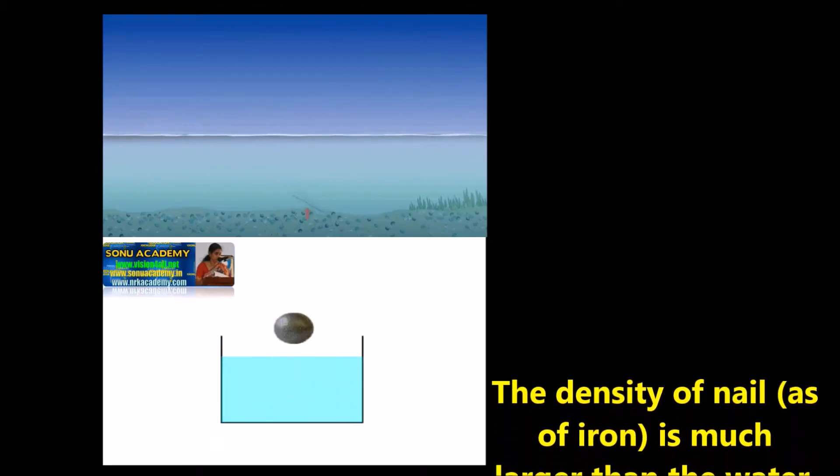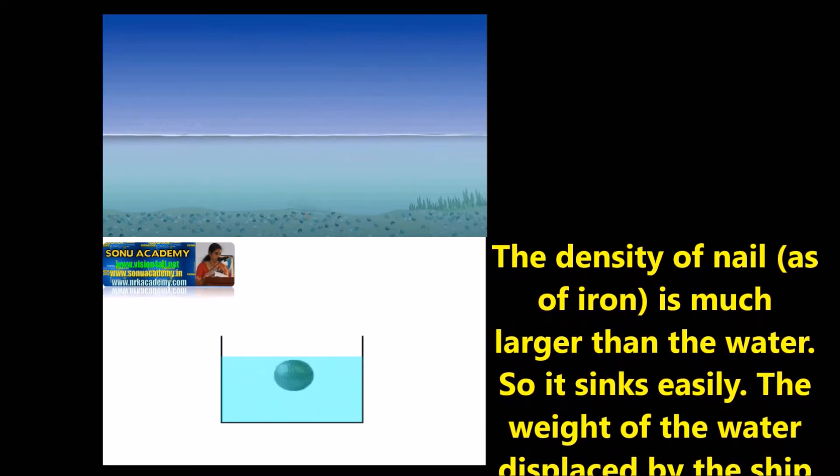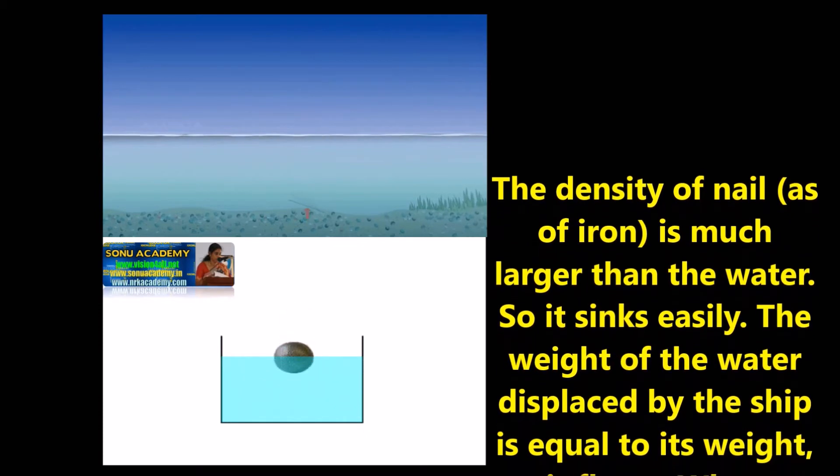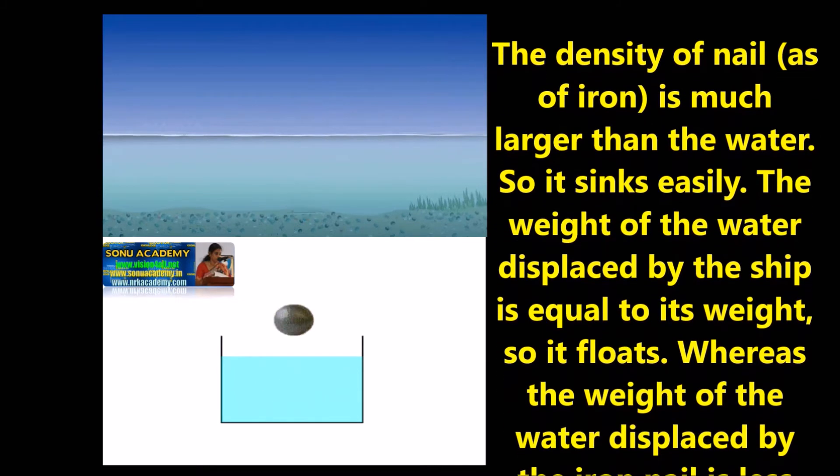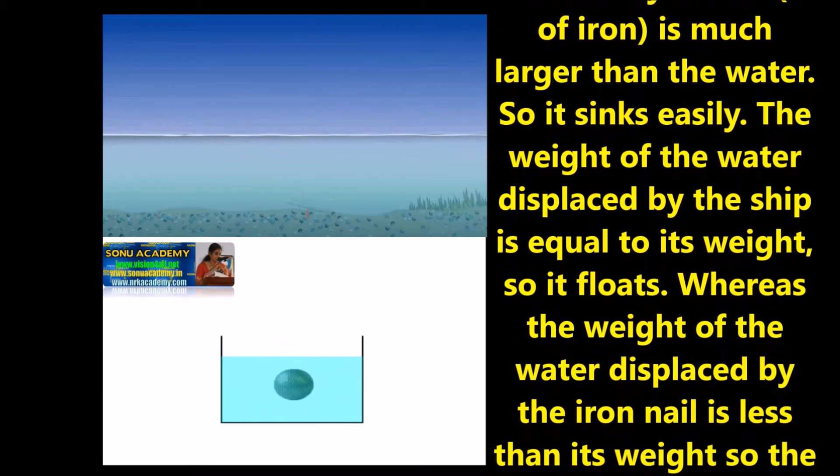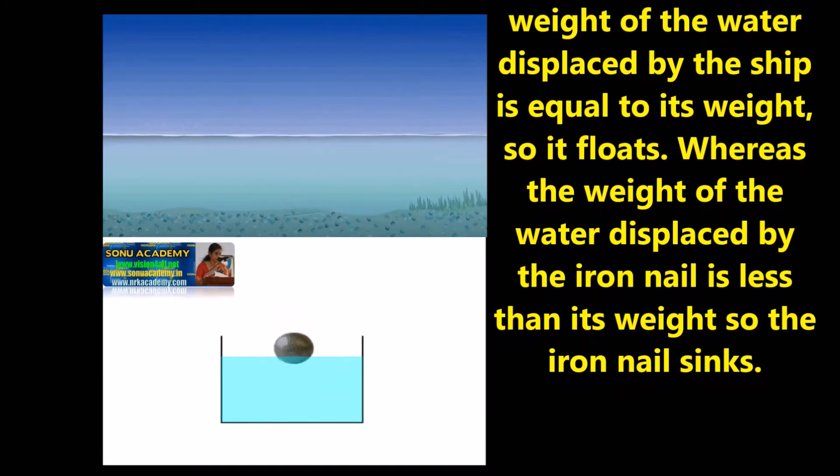The density of a needle is much greater than the water, so it sinks easily. The weight of the water displaced by the ship is equal to its weight, so it floats. Whereas the weight of the water displaced by the iron nail is lesser than its weight, so the iron nail sinks.